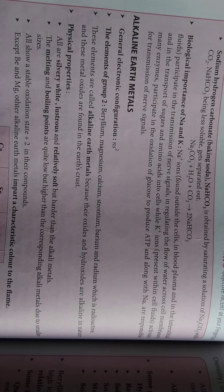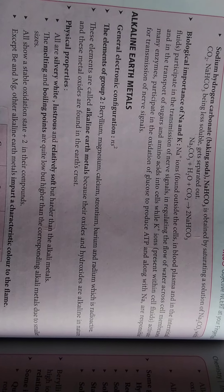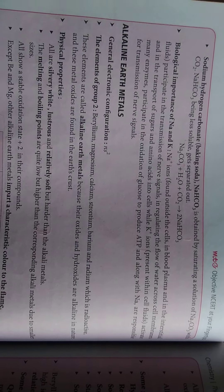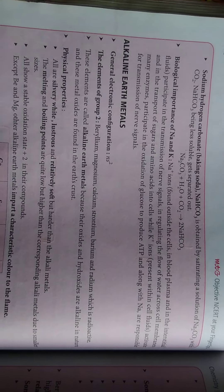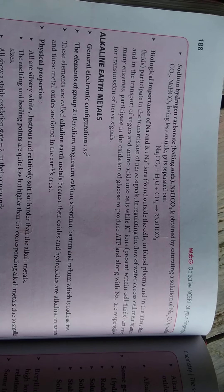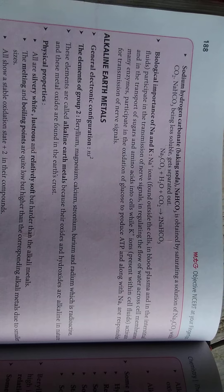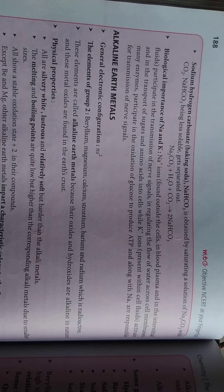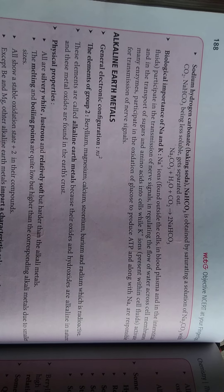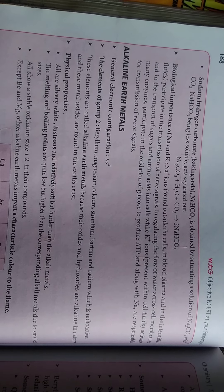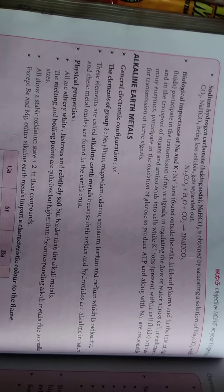Biologically important are sodium and potassium. Sodium ions are found outside the cells, in the plasma and intestine fluid, and participate in the transmission of nerve impulses and regulate the flow of water across cell membranes, as well as the transport of sugars and amino acids into the cell. Potassium ions are present within the cell fluid, activate many enzymes, and participate in the oxidation of glucose and protein synthesis, and along with sodium are responsible for the transmission of nerve signals.